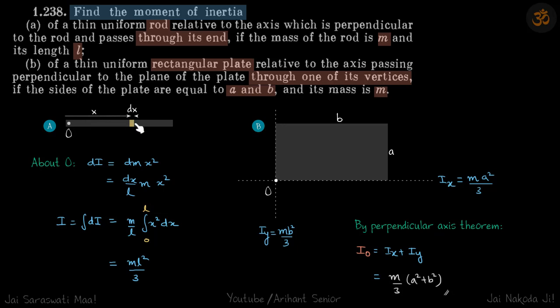Let's calculate the moment of inertia due to the element at O, and then we can integrate to find the total moment of inertia of the rod about O. About O, dI is equal to dm x square.